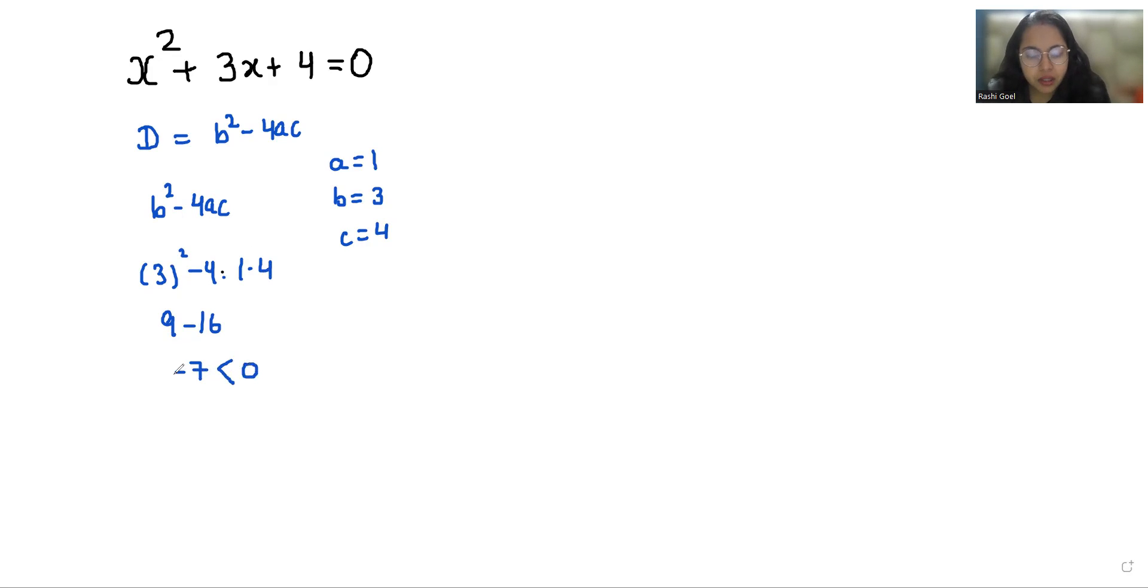So we are going to solve this with the quadratic formula, that is x = (-b ± √(b² - 4ac)) / 2a. So we put the value of b, that is -3 ± √(3² - 4·1·4) / 2·1.